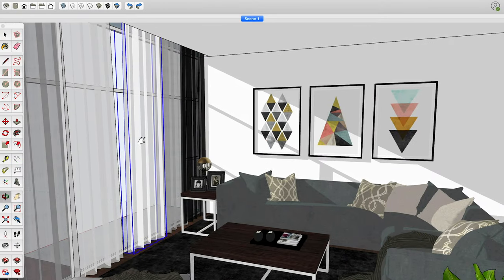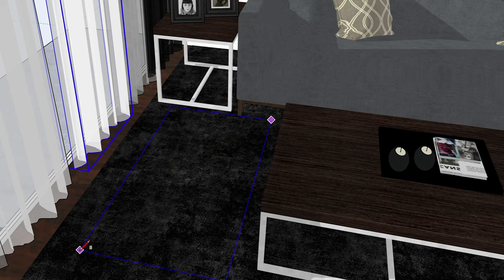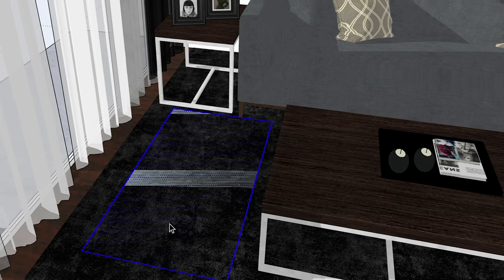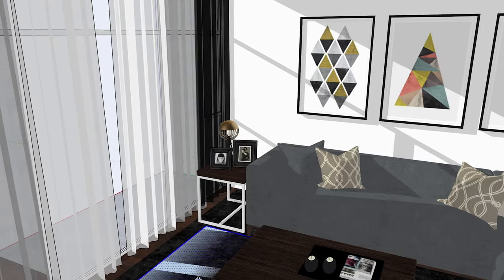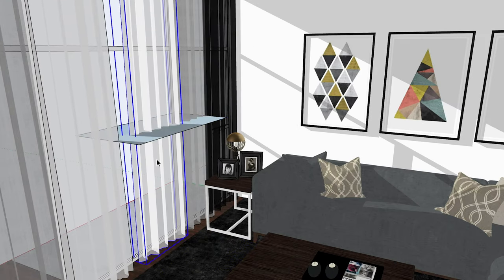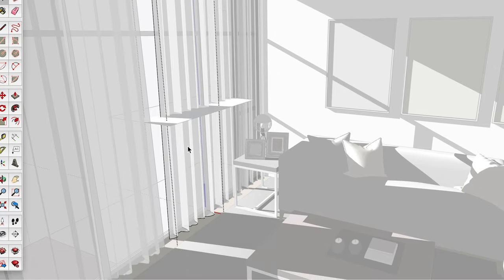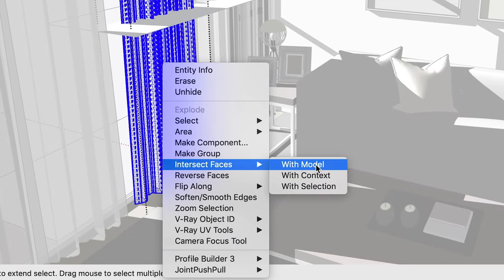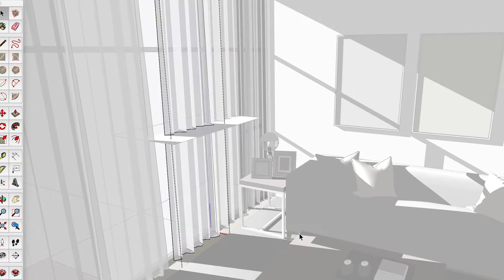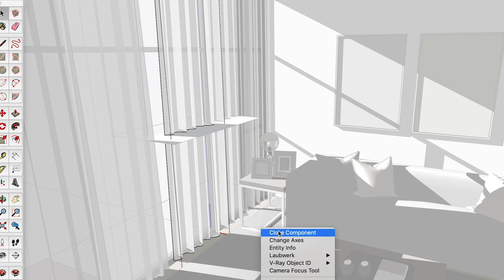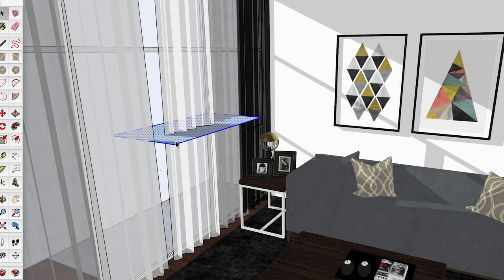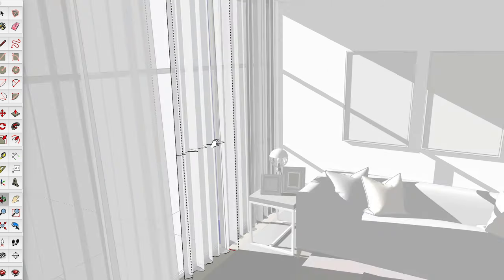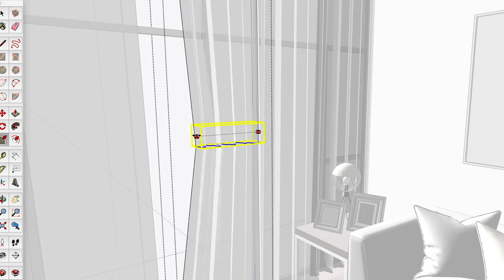Whenever you have a shape that you need to subdivide with an edge loop, just follow these steps. First, make sure your shape is made into a group or component. Then, outside of that group or component, draw a rectangle that is bigger than your shape and use the move and rotate tools to move it into position. Then, go back into your shape and get into edit group or component mode. Select all the faces that need to be intersected, then right click on the selection and pick the option for intersect faces with model. And it will draw in edges that just so happen to be a handy edge loop. After closing the group or component, you can delete away the rectangle. Then back in edit group or component mode, you can use the edge loop to gain more control over the shape you need to modify.